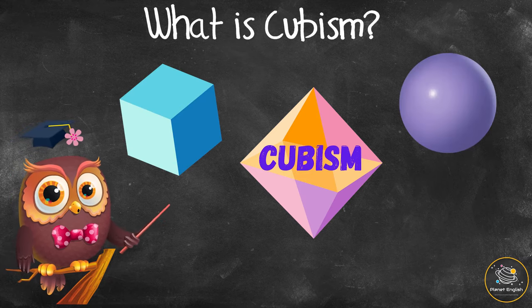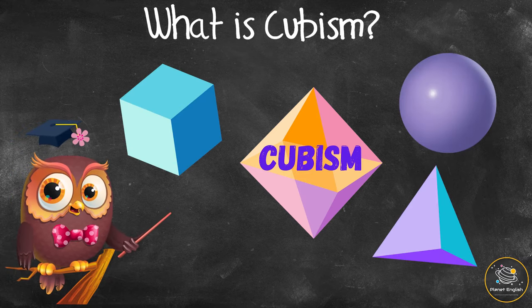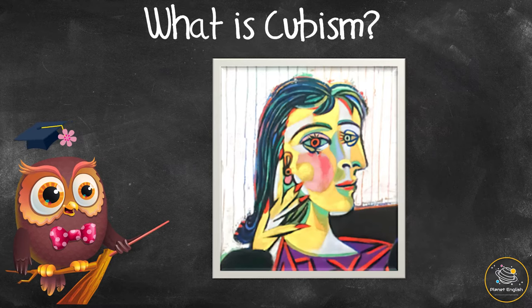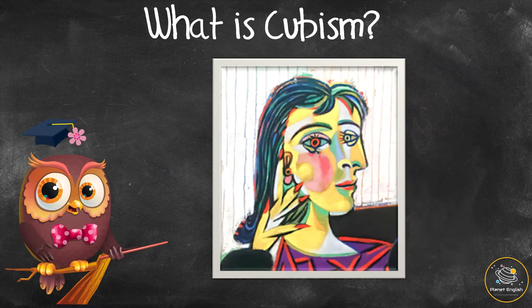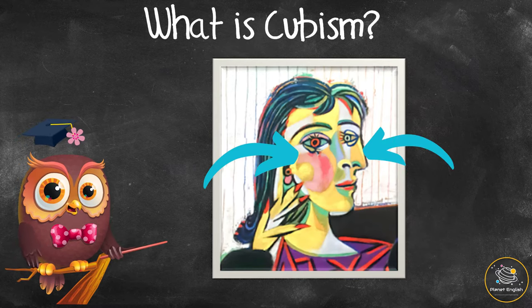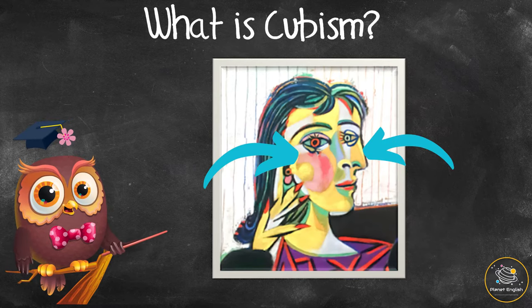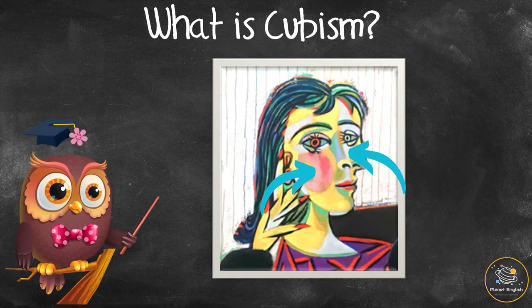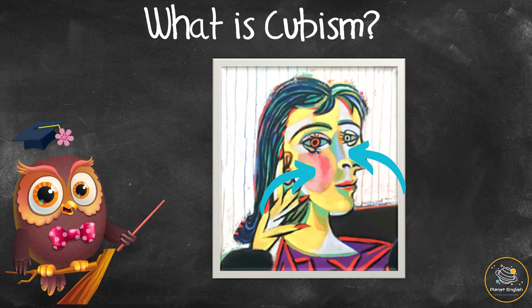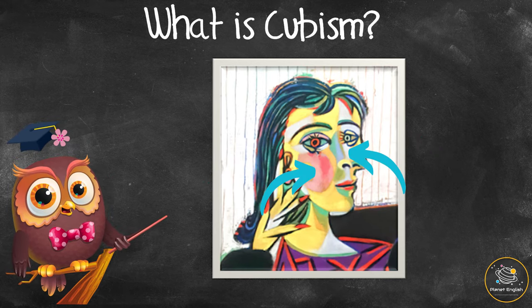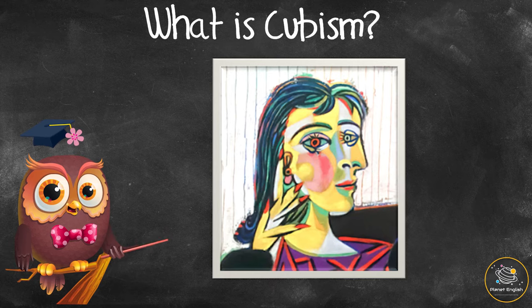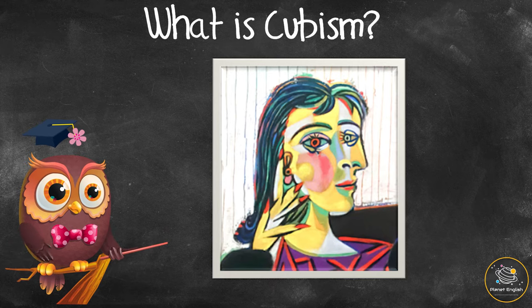What is Cubism? Cubism is when objects are depicted from different angles using geometric shapes like squares, circles, and triangles. When painting faces, Picasso often showed the front and side of a face at the same time. He also used color and brush strokes to give texture to his paintings and to break up the shapes of objects.